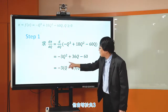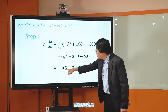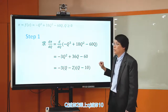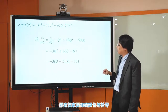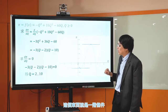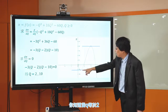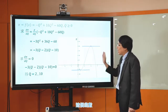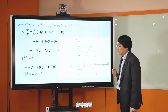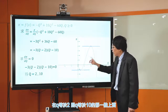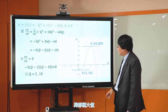然后对一阶导函数做因式分解。把 -3 提出来，变成 -3(q² - 12q + 20)，再对括号内做因式分解，得到 -3(q - 2)(q - 10)。设它等于0，这就是一阶条件。设等于0，你会得到q等于2跟q等于10。也就是说，当q等于2和q等于10的时候，这个函数在那一点上的斜率等于0，一阶导函数为0，所以找到了可能的极值点。